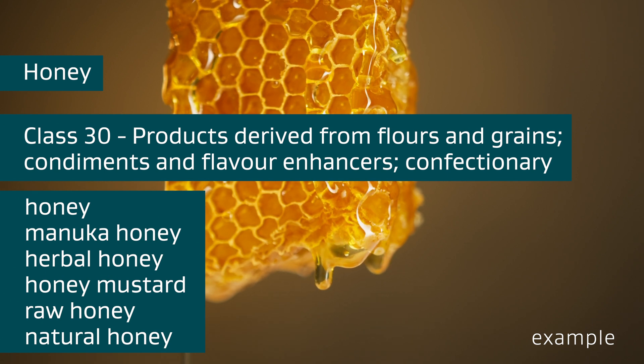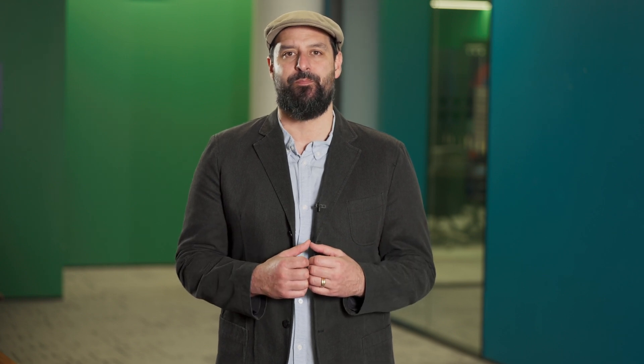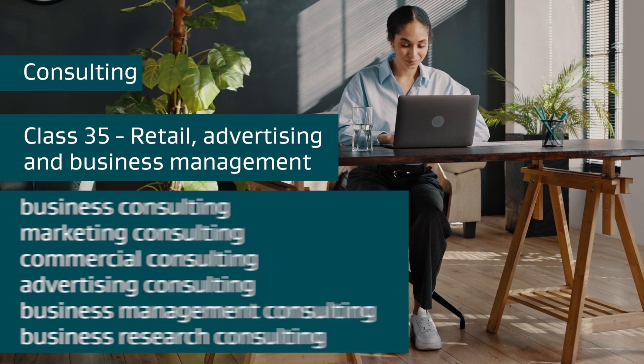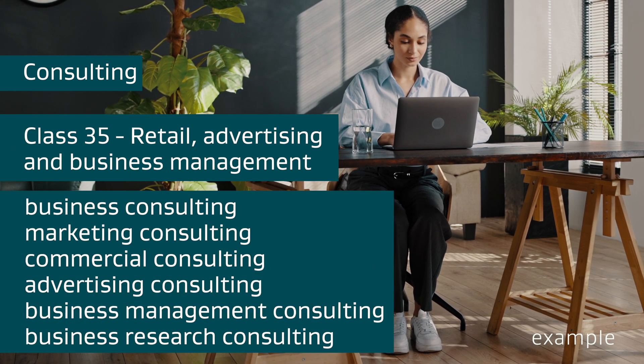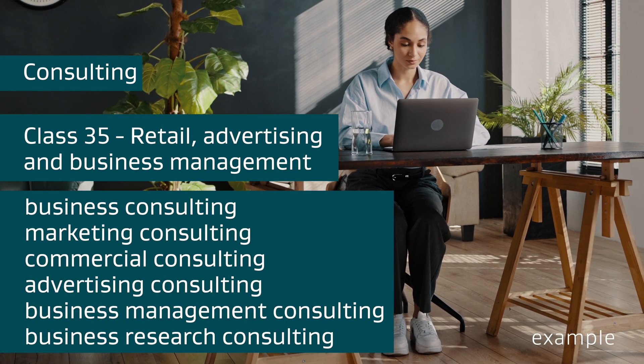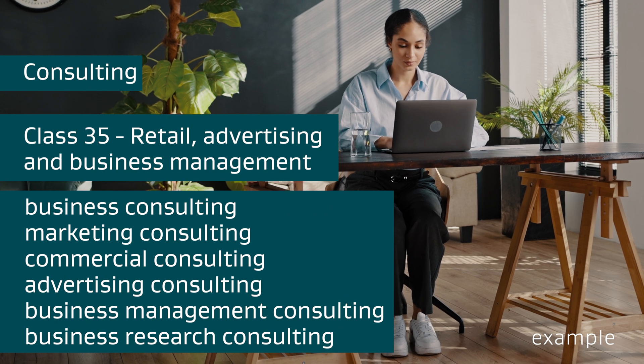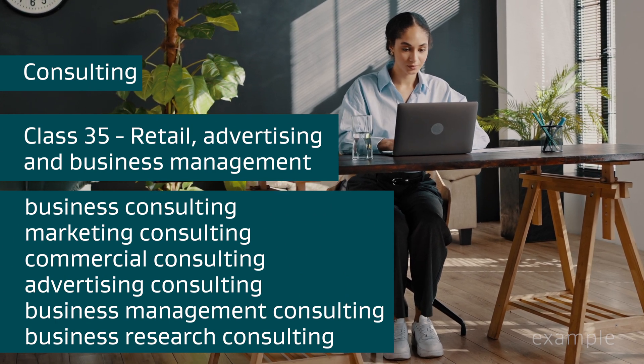Think about what goods or services you're providing to customers and what your business is known for. Your specification is a key part of your trademark application as it ultimately defines the scope of protection if your trademark application is successful. Similar goods and services are grouped into 45 classes.